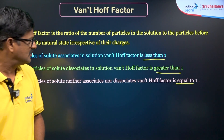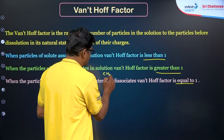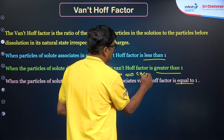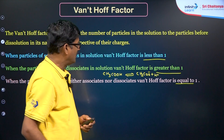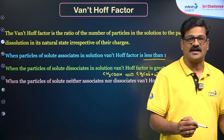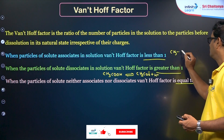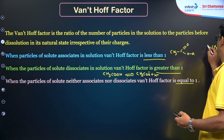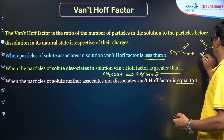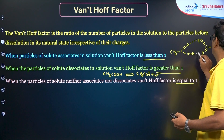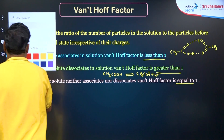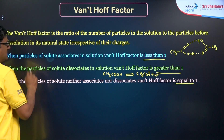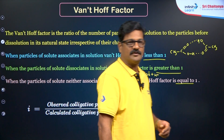For example, when acetic acid dissolves in water, it dissociates to give CH₃COO⁻ and H⁺, so the Van't Hoff factor is greater than 1. If acetic acid is dissolved in benzene, due to intermolecular hydrogen bonding, association takes place and the Van't Hoff factor is less than 1. You can see how association takes place and hydrogen bonding is observed. The Van't Hoff factor can also be expressed as the ratio of observed colligative property to the calculated colligative property.